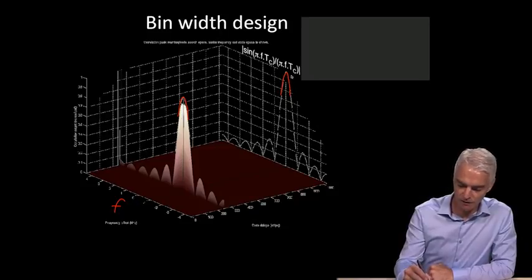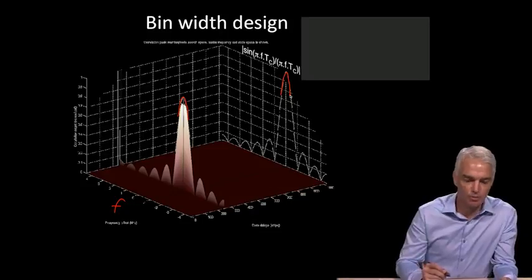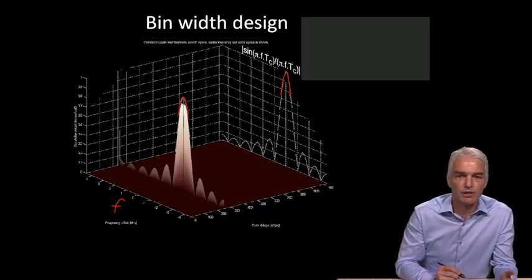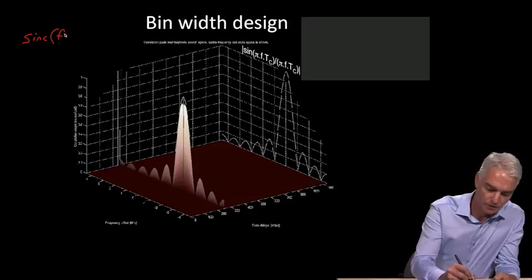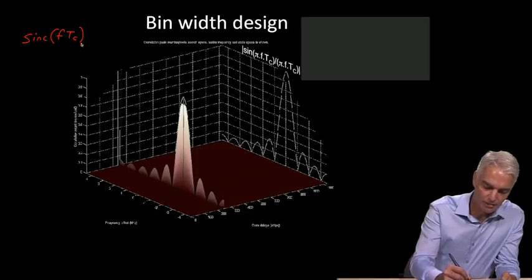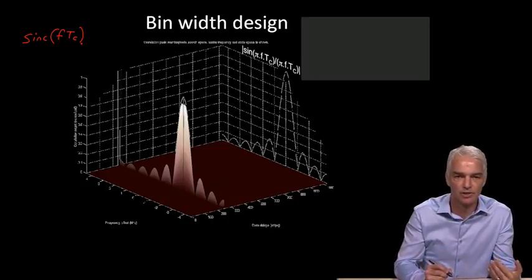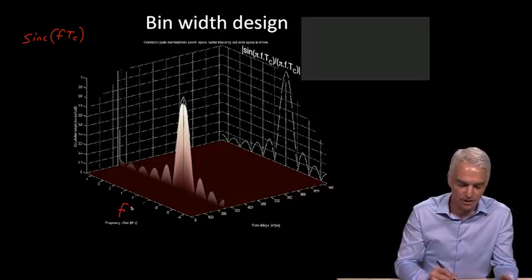What is this function that we're looking at? It turns out it's something called a normalized sinc function of the frequency multiplied by the coherent integration time. We write that as sinc of the frequency offset times the coherent integration time. The coherent integration time is how long we integrate the signal for after doing the correlation.